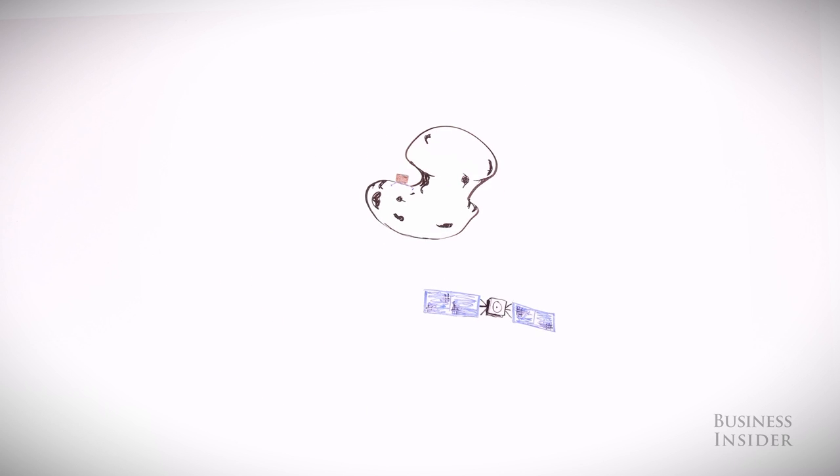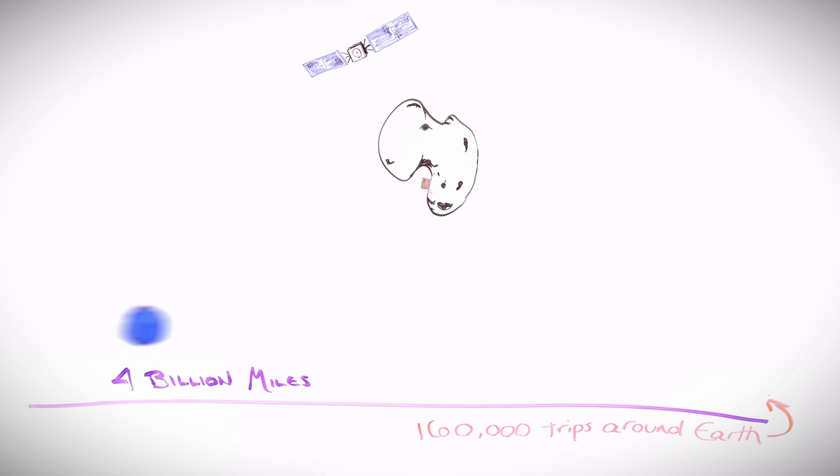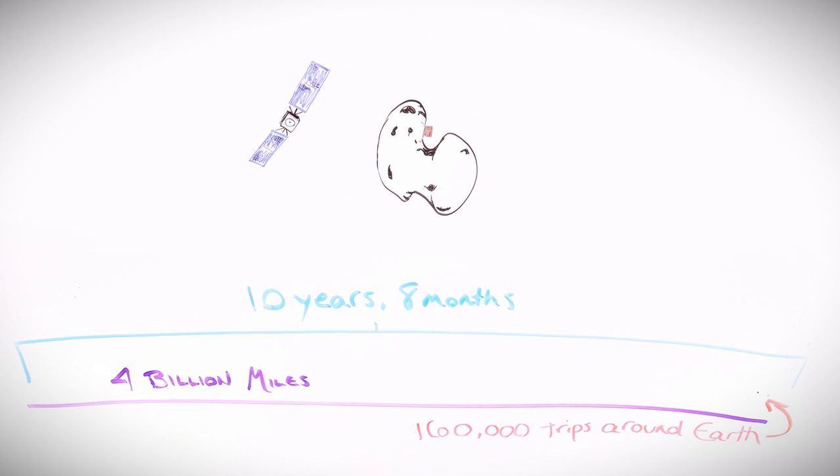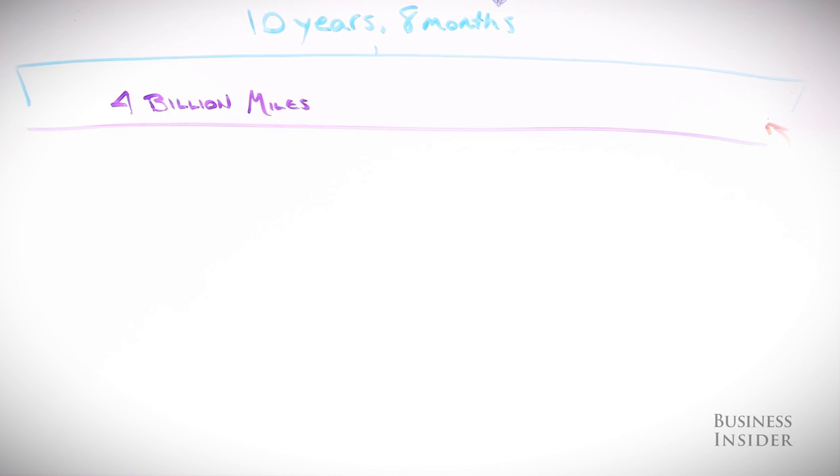To complete this mission, Rosetta had to travel almost 4 billion miles over the course of a decade. How do you even begin to achieve something so remarkable? Well, with a lot of math and careful planning.